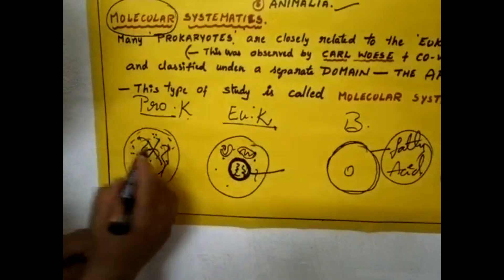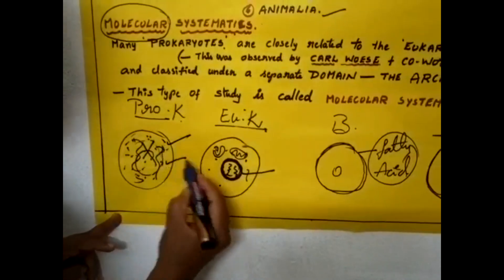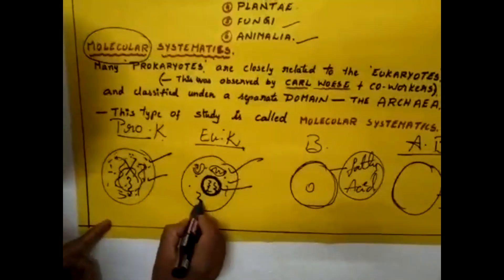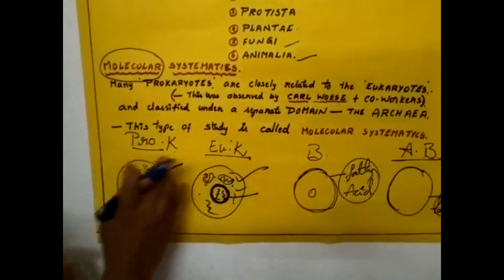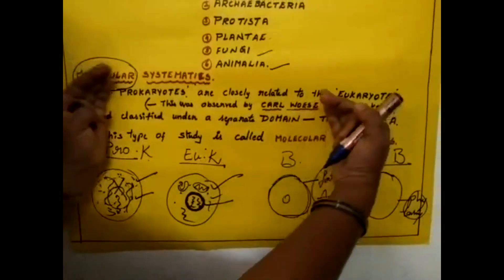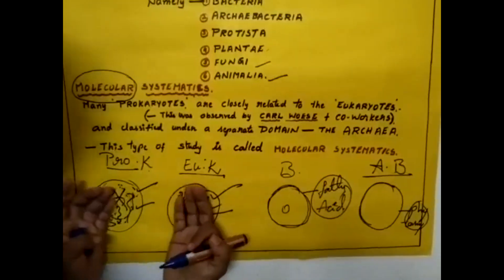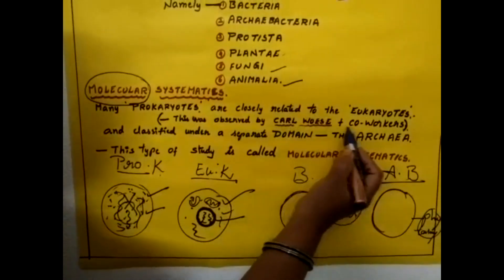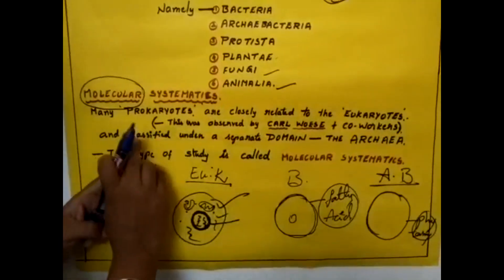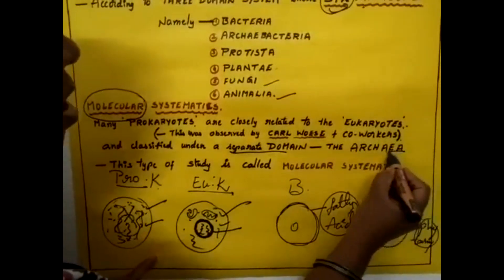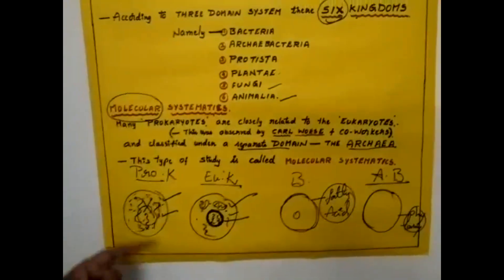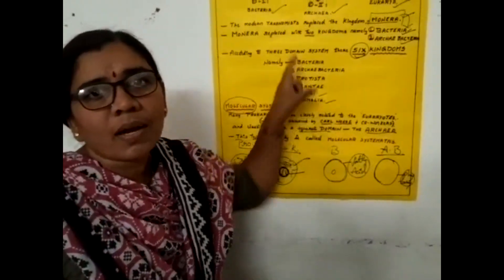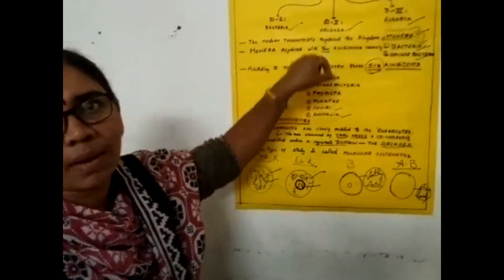These remaining features are all the same: cytoplasm is present, cell membrane is present, and DNA is present in both — that is why they are closely related. This phenomenon was observed by Carl Woese and co-workers, and they classified them under a separate domain called Archaea. This type of study is called molecular systematics. I hope you all understand about this three-domain classification.